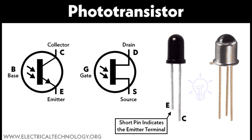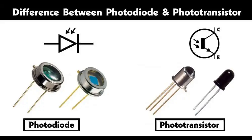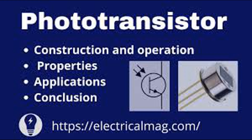The electron-hole pairs generate a small base current. In a phototransistor, this current is generated internally by the light, unlike in a regular transistor where the base current is supplied externally. The excited electrons are attracted to the positively charged base terminal while the holes are attracted to the negatively charged base terminal, constituting the base current I_B. This small base current controls a much larger current flowing from the collector to the emitter due to the transistor's amplifying properties. The collector current I_C is typically much larger than the base current, usually by a factor called the current gain beta (H_FE).